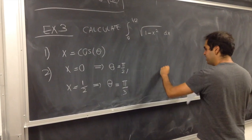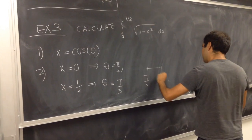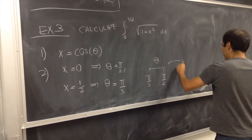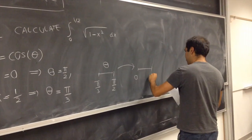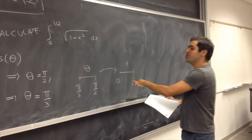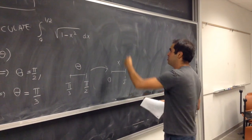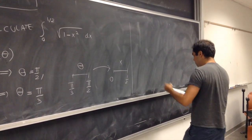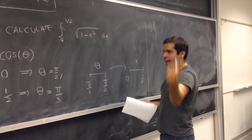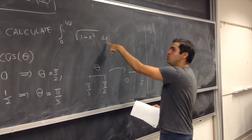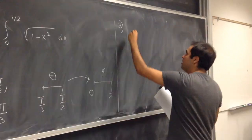So the interval [pi/3, pi/2] in terms of the new variable corresponds to our original interval [0, 1/2]. Notice there's a backwards, inverse thing going on — and in fact this will also be true in multivariable calculus. Just as in the previous video we calculated du in terms of dx, here we want to do dx in terms of the new variable.